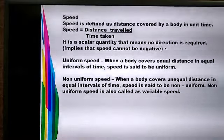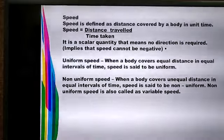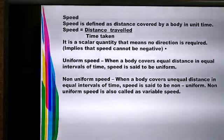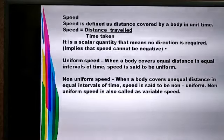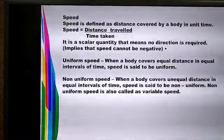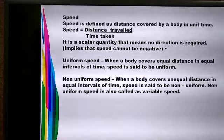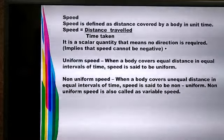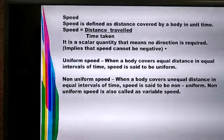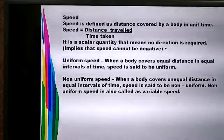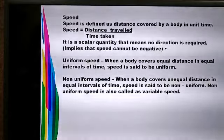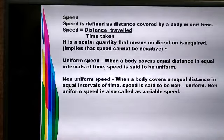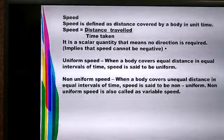In uniform motion, an object covers equal distance in equal intervals of time, while in non-uniform motion it covers unequal distance in equal intervals of time. Uniform motion is also called uniform speed or constant speed. When a body covers unequal distance in equal intervals of time, the speed is called non-uniform speed, which is also called variable speed.